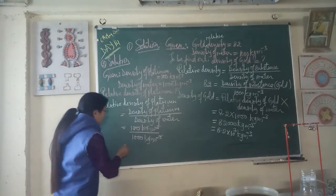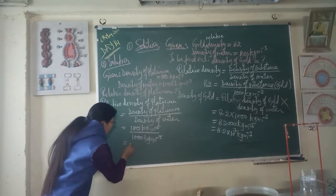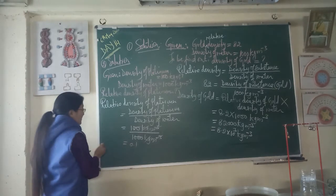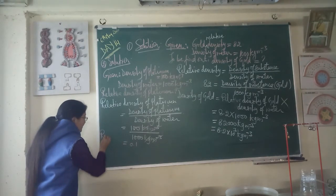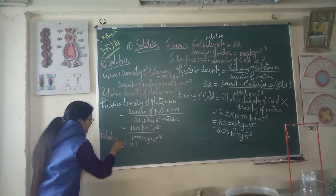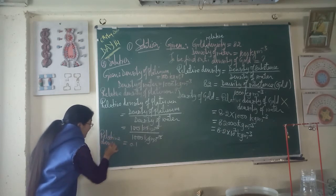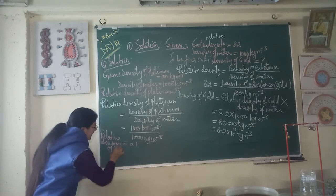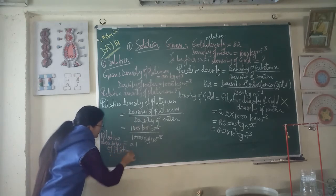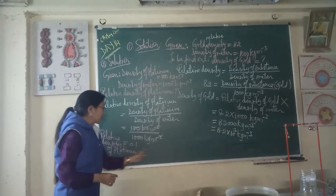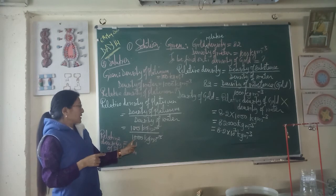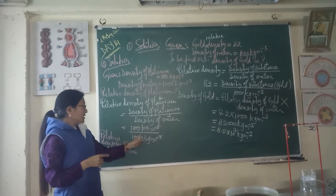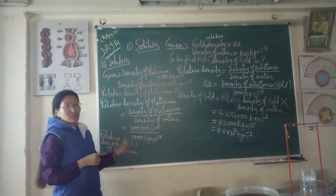The units cancel out, giving a dimensionless number. The relative density of platinum is 21,000 divided by 1000, which equals 21. The relative density is 21 — it has no units since the units cancel.